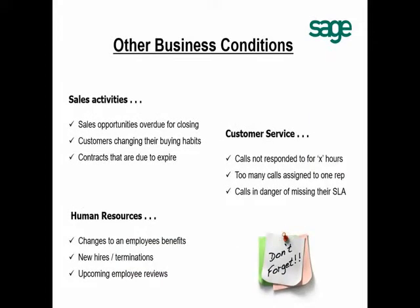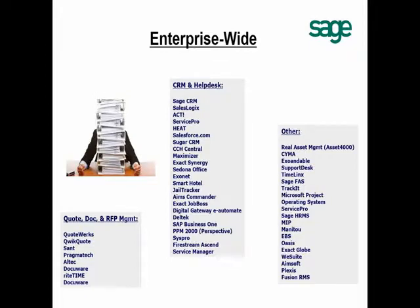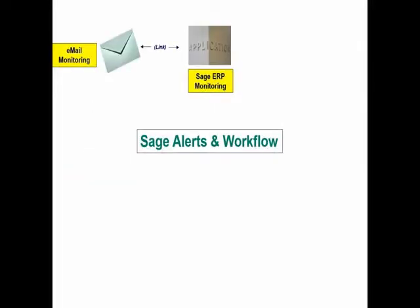Alerts and Workflow can also notify you whenever someone has changed the value of critical information in your Sage 300 database, such as a change to a customer's credit limit or credit status. Additionally, it can be used with other business applications beyond Sage 300 — maybe you own Sage CRM, a human resources application, or a customer service app. Alerts and Workflow can monitor, send alerts, and trigger workflow for any of your other business applications as well.